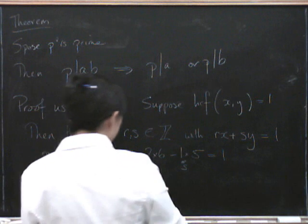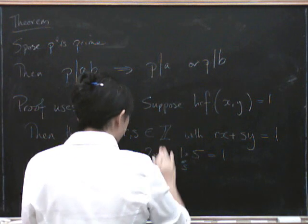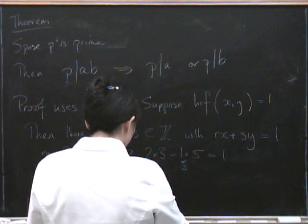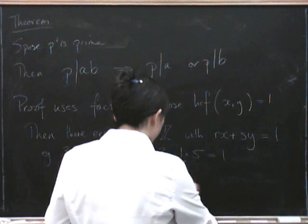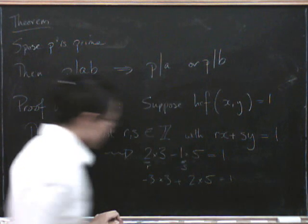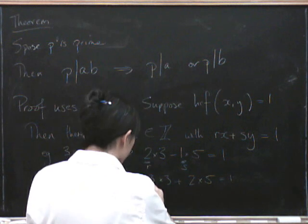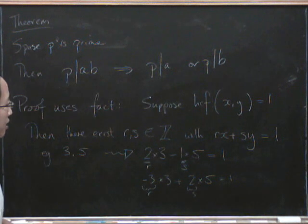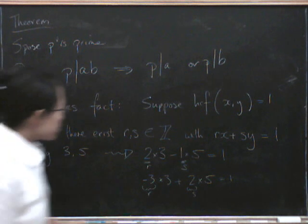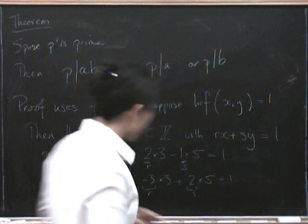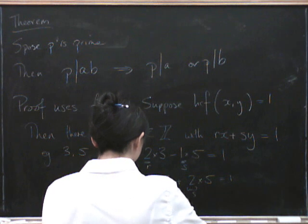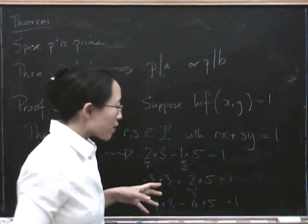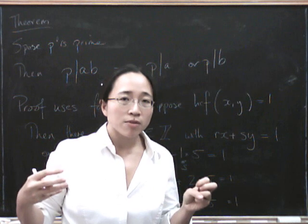And these two things are not unique, right? Because we could also have had minus 3 times 3 plus 2 times 5 equals 1. Because this is minus 9 and that's 10 and we get 1. So this here is now the r and this here is the s. And what else could we have had? Well, we could also have used 21 minus 20. We could have lots of possible different ways of taking some number of 3's together with some number of 5's and making 1.